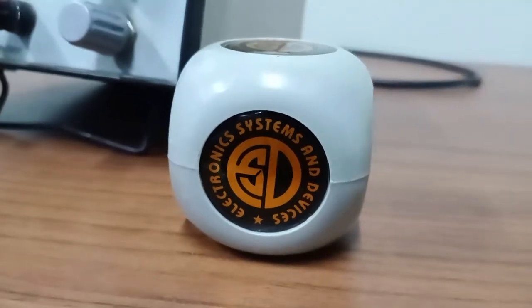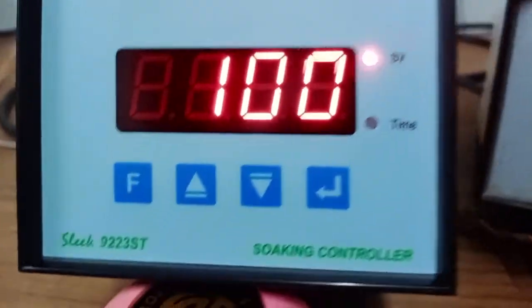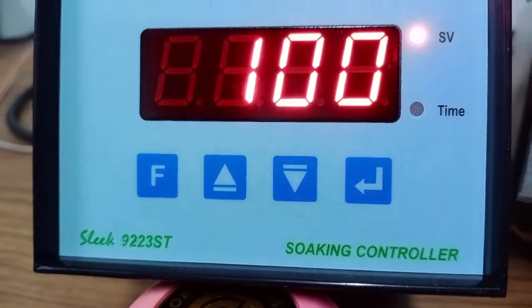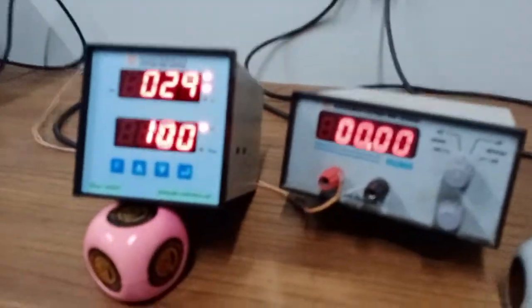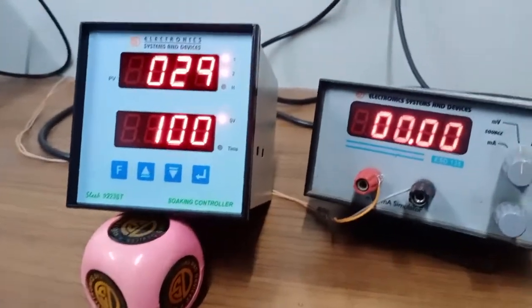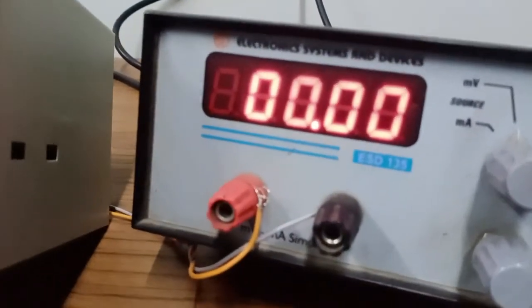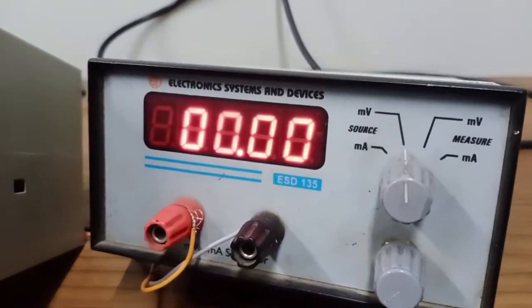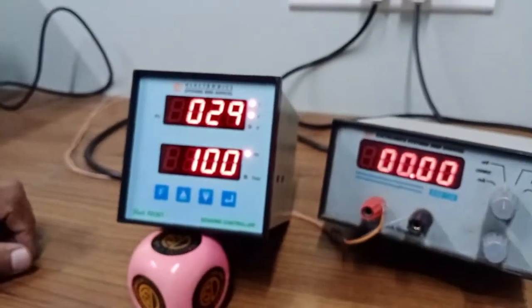Welcome to electronic systems and devices product demonstration. Today we will be doing the demonstration for Sleek 9223ST which is a soaking controller. This input to this is K-type thermocouple. We will be using ESD135 which is a simulator. We will be feeding millivolts from this. We start with the program mode.